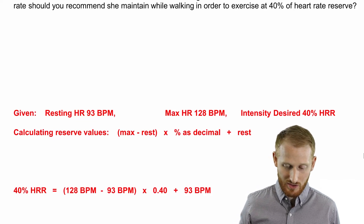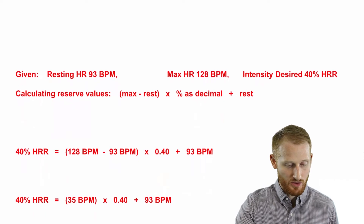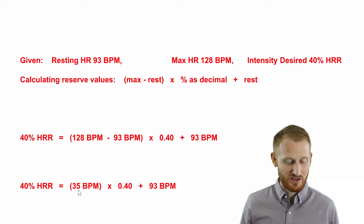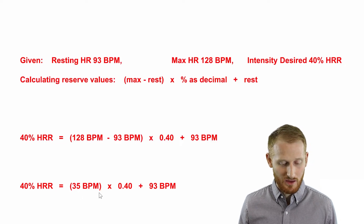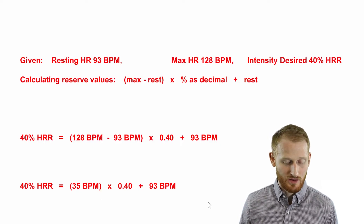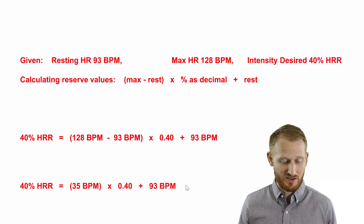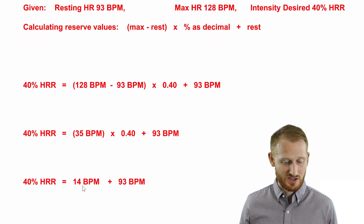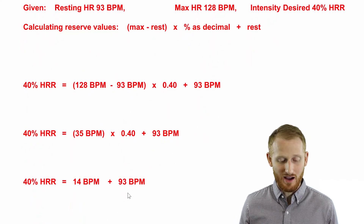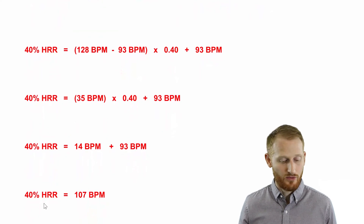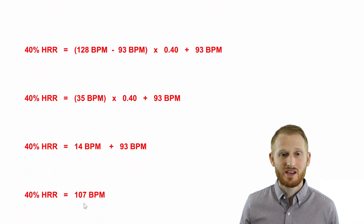Let's go one step at a time. 128 minus 93 — max minus rest — gives us her heart rate reserve of 35 beats per minute. She can get her heart rate up 35 beats per minute above rest. Then take 35 and multiply by 0.4 to get 40% of that, which gives 14 beats per minute. Add back her resting heart rate of 93, and you find that 40% of her heart rate reserve equals 107 beats per minute.